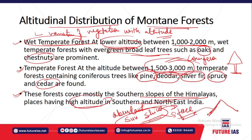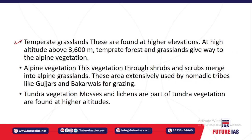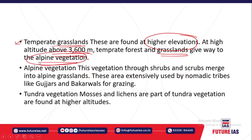Temperate grasslands are found in the higher elevations, above 3000 meters. Beyond roughly 3600 meters above mean sea level, you have grasslands. After 3600 meters, you have alpine vegetation. So up to 3600 meters are temperate grasslands, and beyond that is alpine vegetation in the form of shrubs and scrub, because the limitation is water availability.